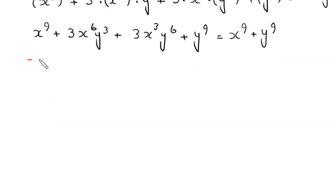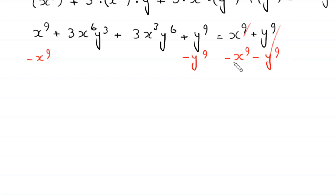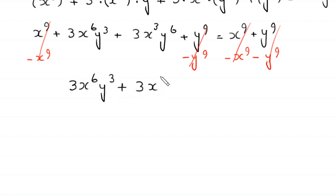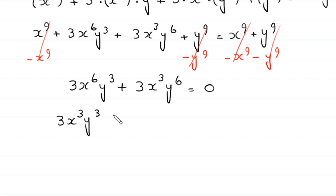Now we subtract x⁹ and y⁹ from both sides. Those terms cancel on each side, and the equation becomes 3x⁶y³ + 3x³y⁶ = 0. From these two terms we can factor out 3x³y³.